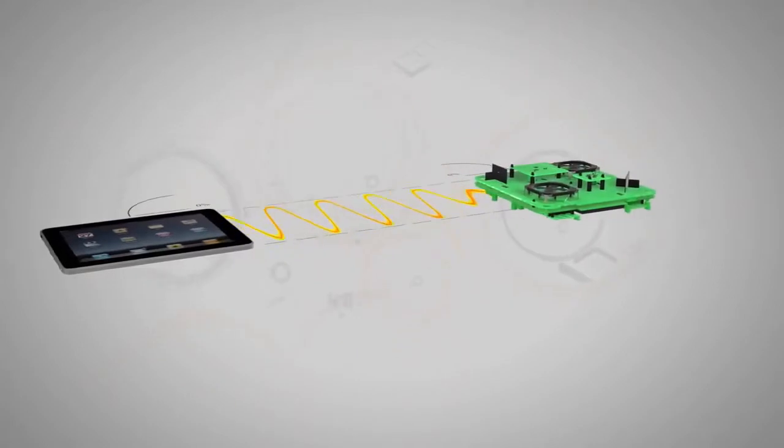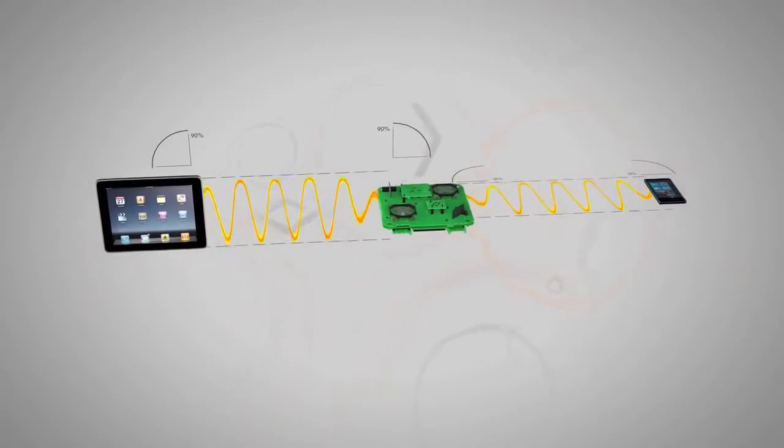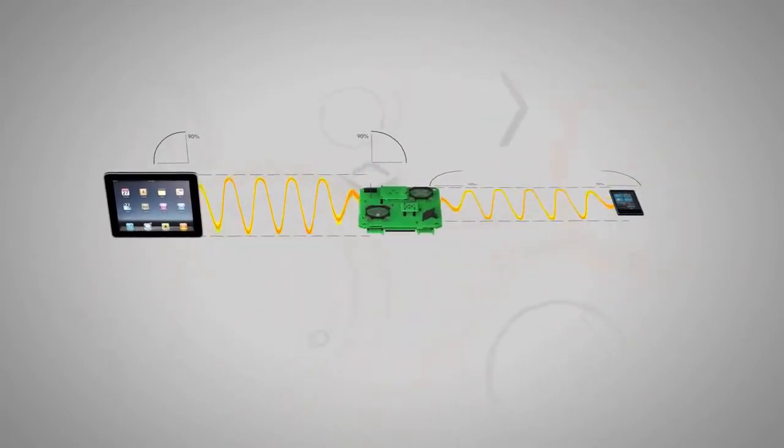BeamFlex solves this with antennas that transmit and receive in both horizontal and vertical orientations, to improve the reception of traffic from weaker mobile devices.